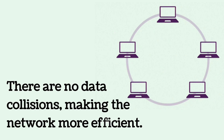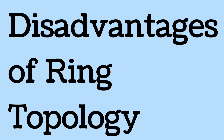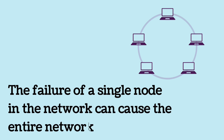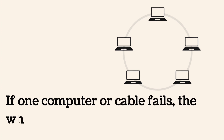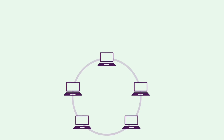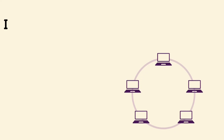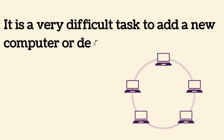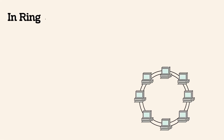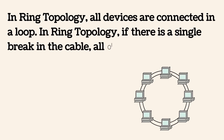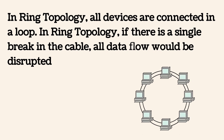Disadvantages of ring topology: the failure of a single node can cause the entire network to fail — if one computer or cable fails, the whole network stops. Adding or removing computers can be difficult. It is a very difficult task to add a new device. If there is a single break in the cable, all data flow would be disrupted.